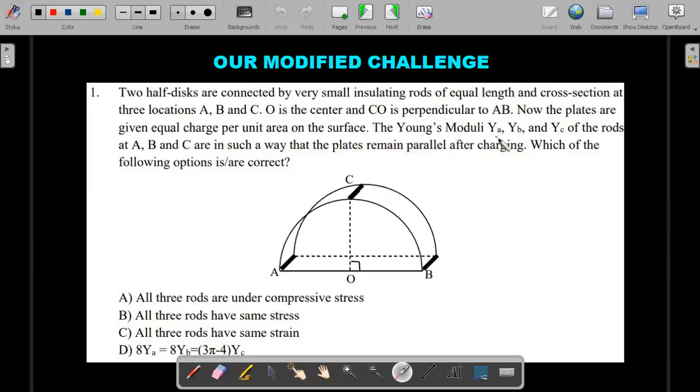The Young's moduli of the three rods are YA, YB and YC, and they are charged in such a way that these plates remain parallel even after charging. So after charging, there would be some forces, and even after the application of those forces and the elastic nature of the rods taking over, the system of two plates remain parallel to each other. That's the conditions given in the question.